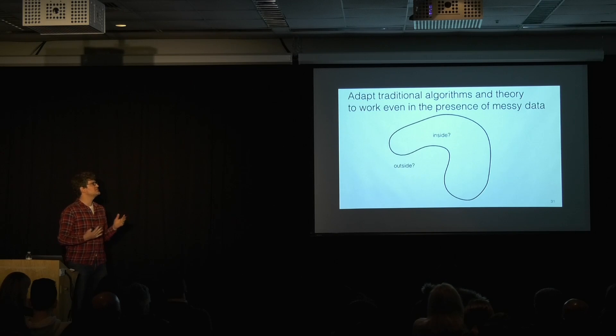So my idea is to adapt traditional algorithms and theory from mathematics to work even in the presence of messy data. So let's take an example of a simple 2D curve. If we thought about this, how do we tell what's inside and what's outside? Probably each of us in this room could think of some kind of algorithm, some kind of recipe to determine what's inside, what's outside.